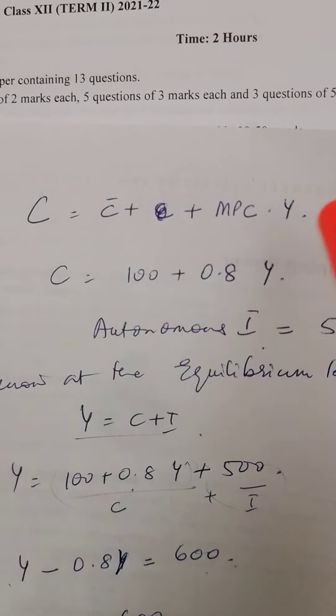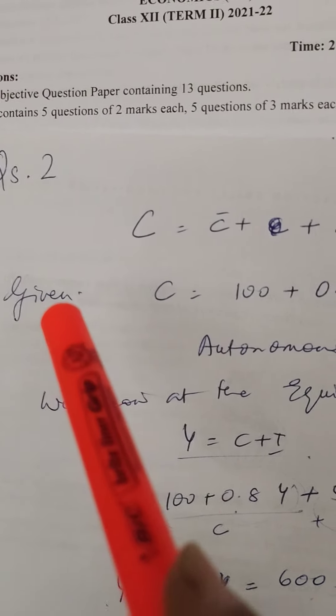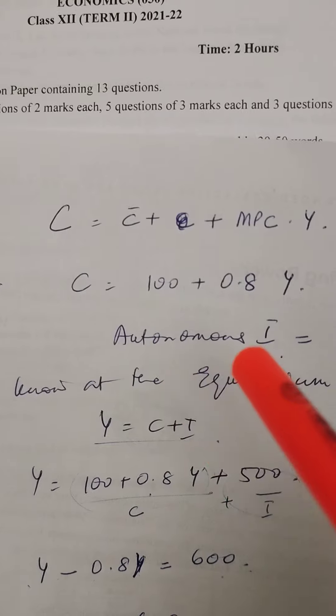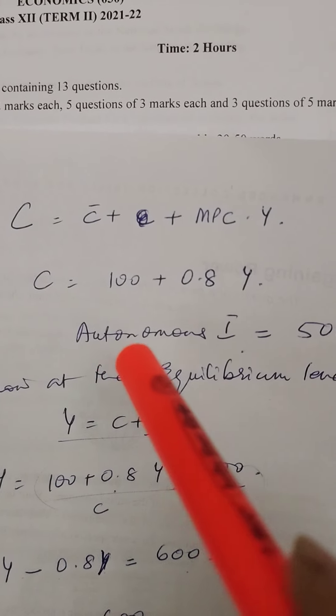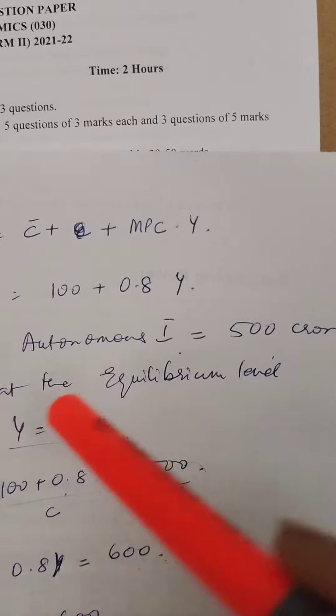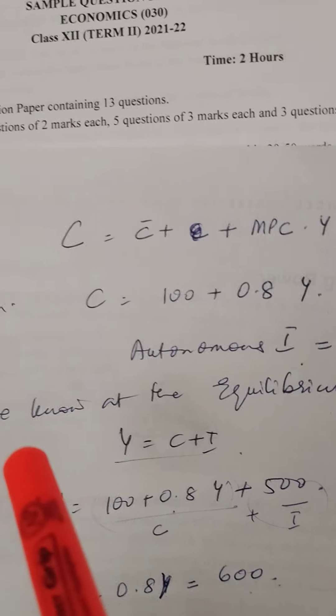What is given is C = 100 + 0.8Y. You write down the given. Now you want to find out the income. Autonomous investment is also given as 500 crores. So it becomes very simple. Two marks question.